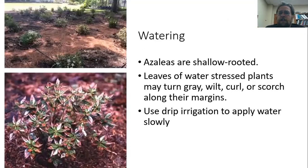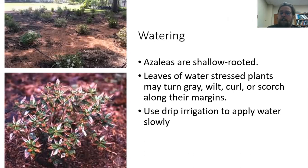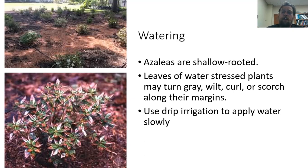Azaleas tend to be fairly shallow rooted, and when they get water stressed, leaves may turn gray or wilt and you may see scorch along the leaf margins. Apply irrigation when needed — I advocate for drip irrigation as the most efficient method because it delivers water right to the base of the plant where the roots need it, rather than spraying across the leaves, which can worsen some disease problems or result in water evaporating away.